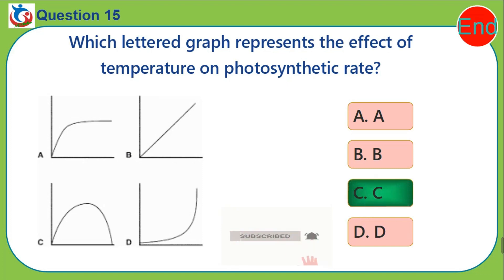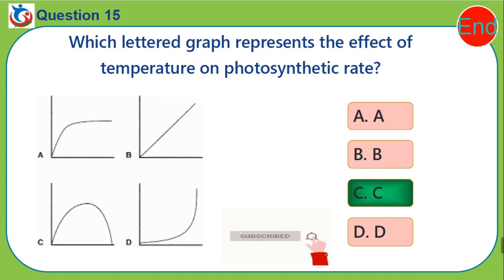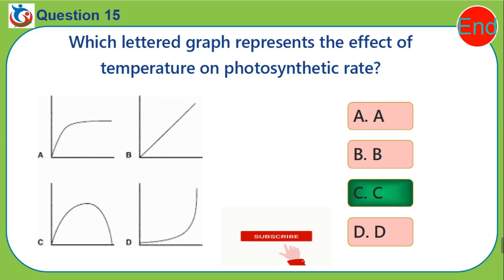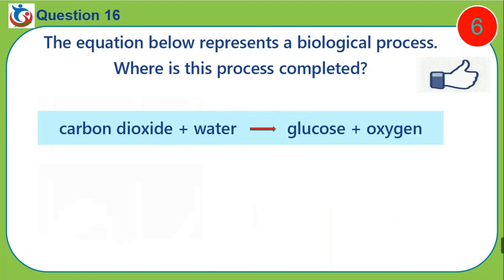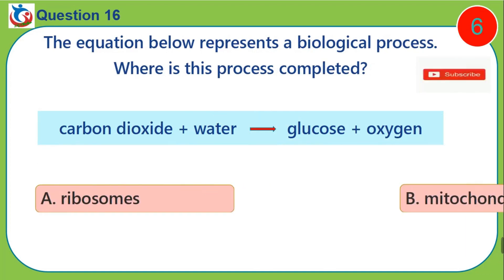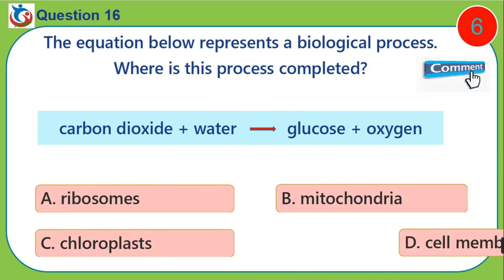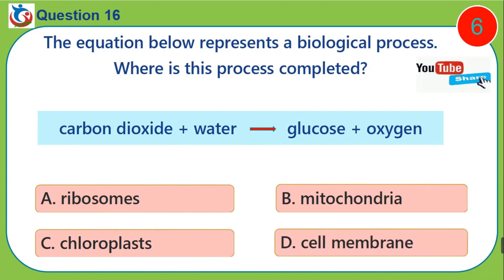Please like this video, subscribe to this channel and click the bell button — it's totally free. Question sixteen: The equation below represents a biological process. Where is this process completed? A) ribosomes, B) mitochondria, C) chloroplasts, D) cell membrane.